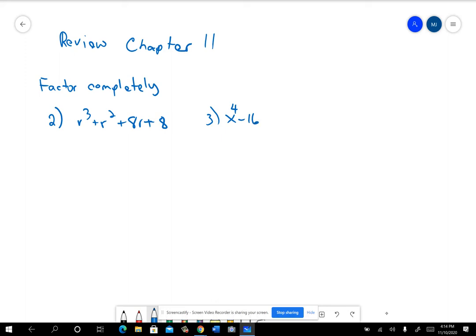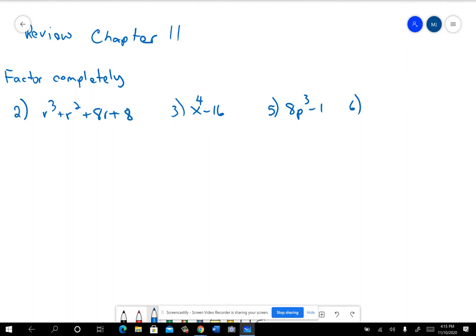And then I thought I would do five and six. Five was 8p to the third minus 1, and on 6, I've got 16y to the fourth minus 56y cubed minus 32y squared.